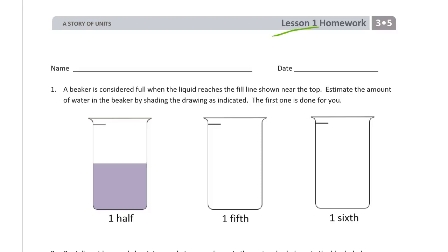Welcome to the homework for lesson one. This is module five of grade three. Please write your name here first. And we have a beaker. It says here a beaker is considered full when the liquid reaches the fill line shown near the top. So these are the fill lines up here. Estimate the amount of water in the beaker by shading the drawing as indicated.